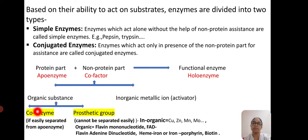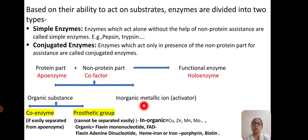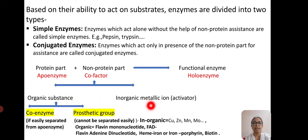If the organic substance is not tightly bound to the apoenzyme, we call it a coenzyme. If the organic substance is tightly bound to the apoenzyme, then we call it a prosthetic group. Other cofactors may also be inorganic metallic ions, which are simply called activators. So a cofactor can be an organic or inorganic substance. If the organic cofactor can be easily detached from the apoenzyme, it is a coenzyme; if tightly bound, it is a prosthetic group.